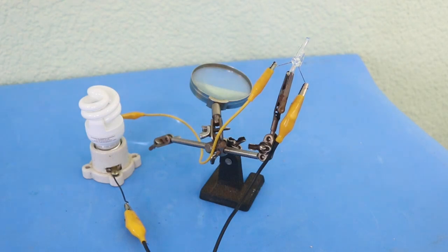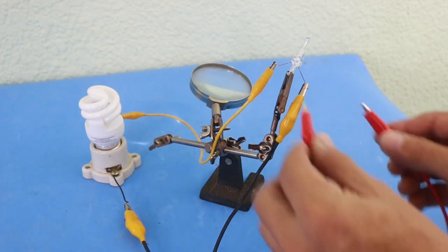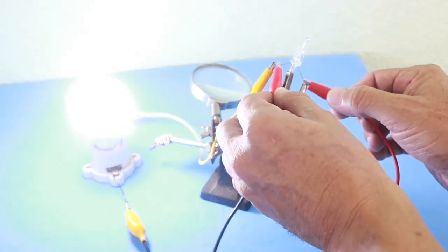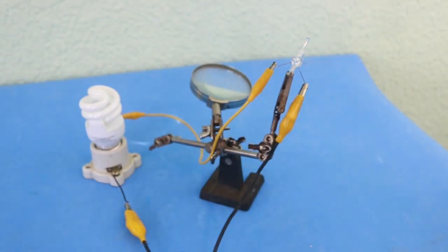Right now it is connected, but electricity does not flow because glass is not conducting at room temperature. If we bypass the glass, you can see how the lamp turns on.